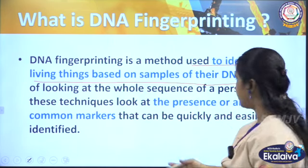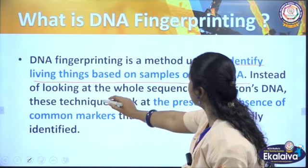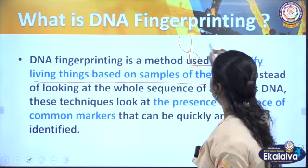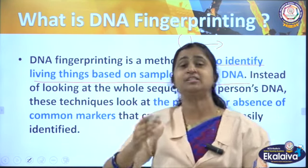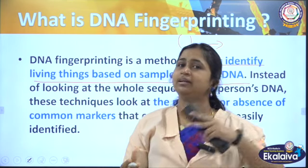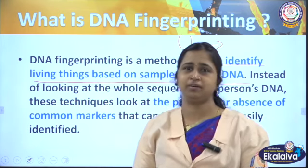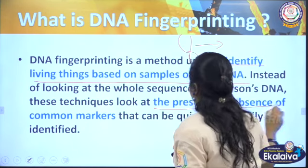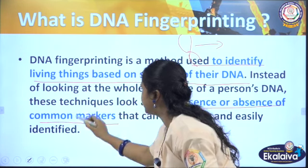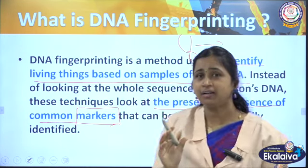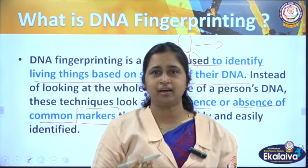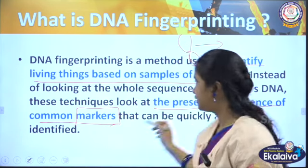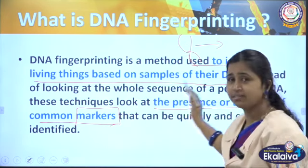There are many methods to do this. Instead of looking at the whole sequence of the DNA, we need not take the whole sequence. We are going to take only the important part that is different — that 0.1%. These techniques look at the presence or absence of a common marker. That marker is nothing but some repetition unit present in each individual, and it is different from person to person.